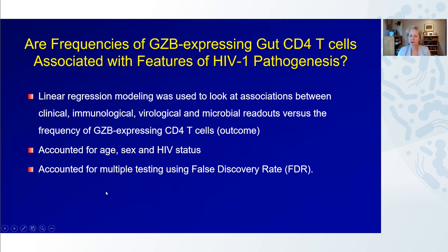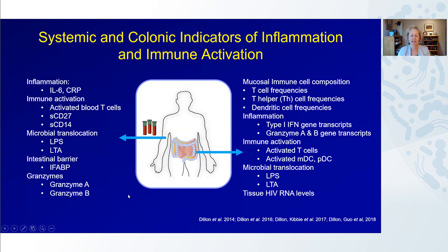We next asked whether frequencies of granzyme B-expressing gut CD4 T cells were associated with features of HIV pathogenesis. To do this, we used linear regression modeling to look at associations between these granzyme B frequencies and a number of different readouts evaluated in previous studies, including clinical, immunologic, and mucosal microbiome readouts. We accounted for age, sex, and HIV status in this analysis, and also accounted for multiple testing using a false discovery rate.